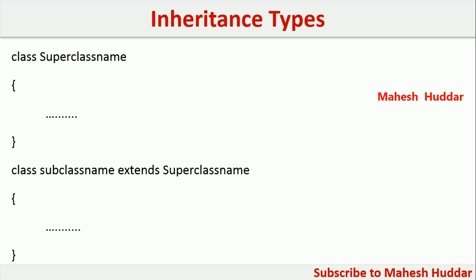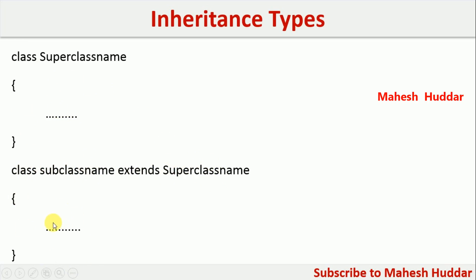This is the syntax for inheritance in Java. Let us assume that we have a class called superclass, defined with the superclass name. If you want to inherit this particular superclass, you have to use the extends keyword — that is, 'class SubclassName extends SuperclassName'. The properties of the superclass will be extended or derived into the subclass.